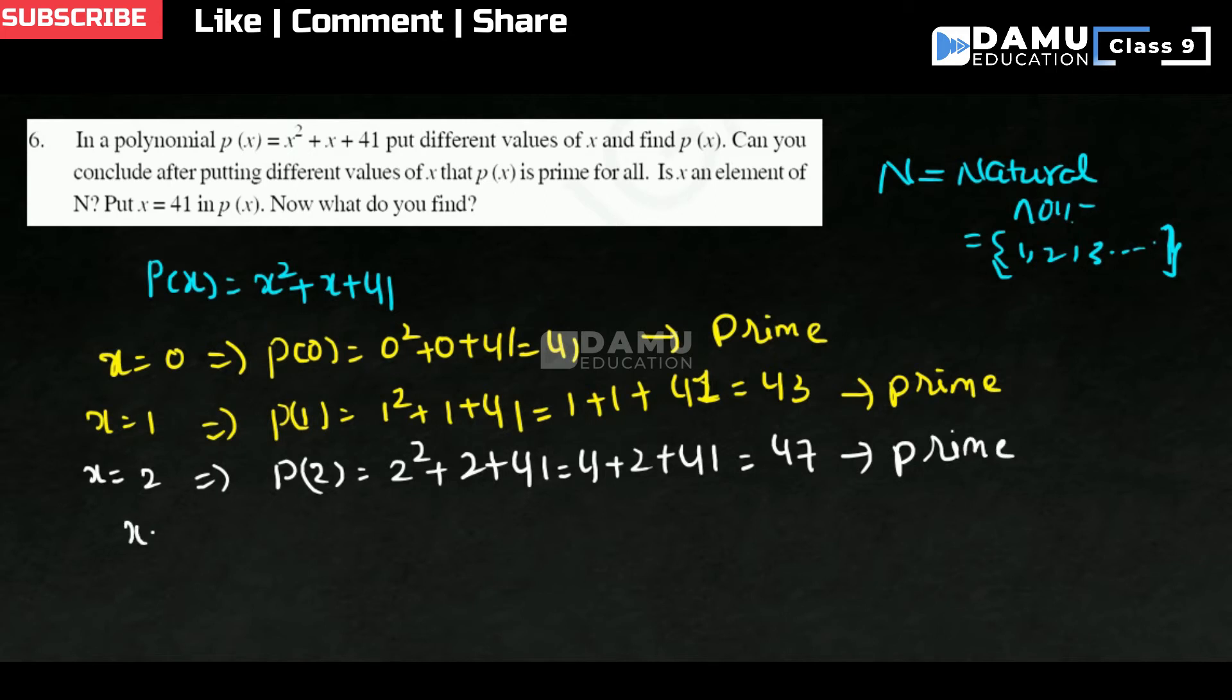Then we are going to check for x equals 3. P(3) will be equal to 3 square plus 3 plus 41. So 3 square is 9 plus 3 plus 41. 9 plus 3 is 12 plus 41 will be 53. So this is also a prime number.